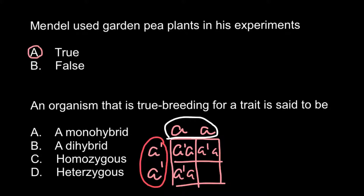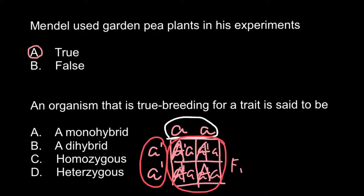If the progeny would be the same color as one parent, we can say that 'a prime' is dominant, so we change it to capital A. All the progeny would be heterozygous and 100% would look phenotypically just like the parent on the left. We call such a cross a monohybrid cross to find which allele is dominant. But we do not stop here — we must make another cross using this F1 progeny as the parental generation for the next generation.